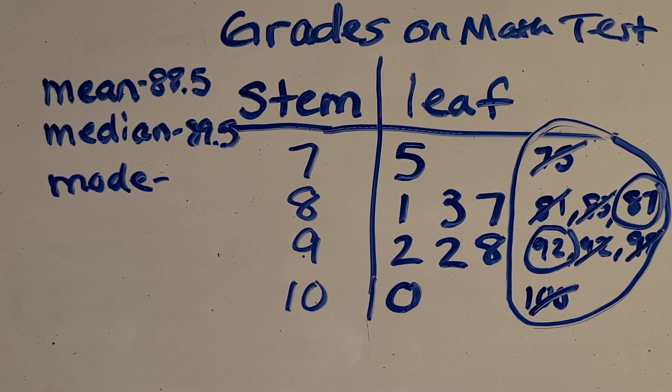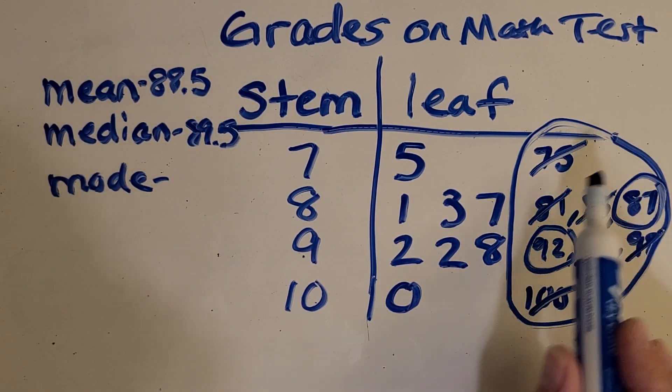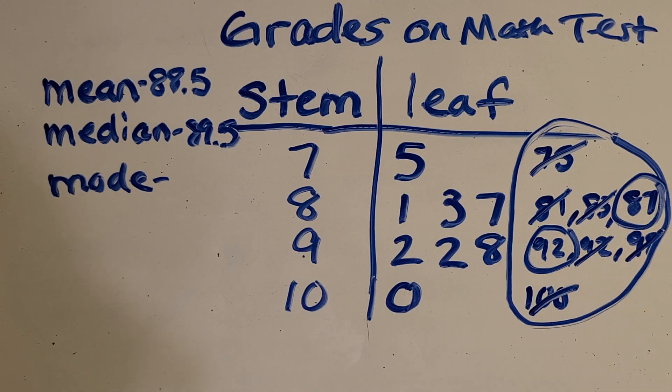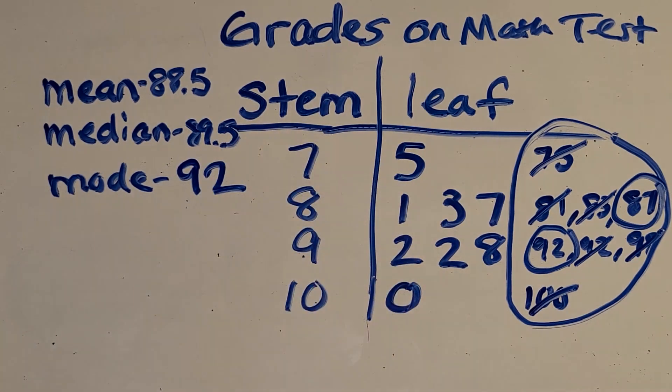Now we're going to talk about mode. Mode means most. So I like to say mode, most, mode, most. So not the greatest, but what happens the most? What grade on the math test happened the most times or with the most frequency? That one's kind of easy to see over here because look, I have two 92s. Everything else is just a one-time thing. Only one person made a hundred, one person made an 87, but two people made a 92. So that is my mode.